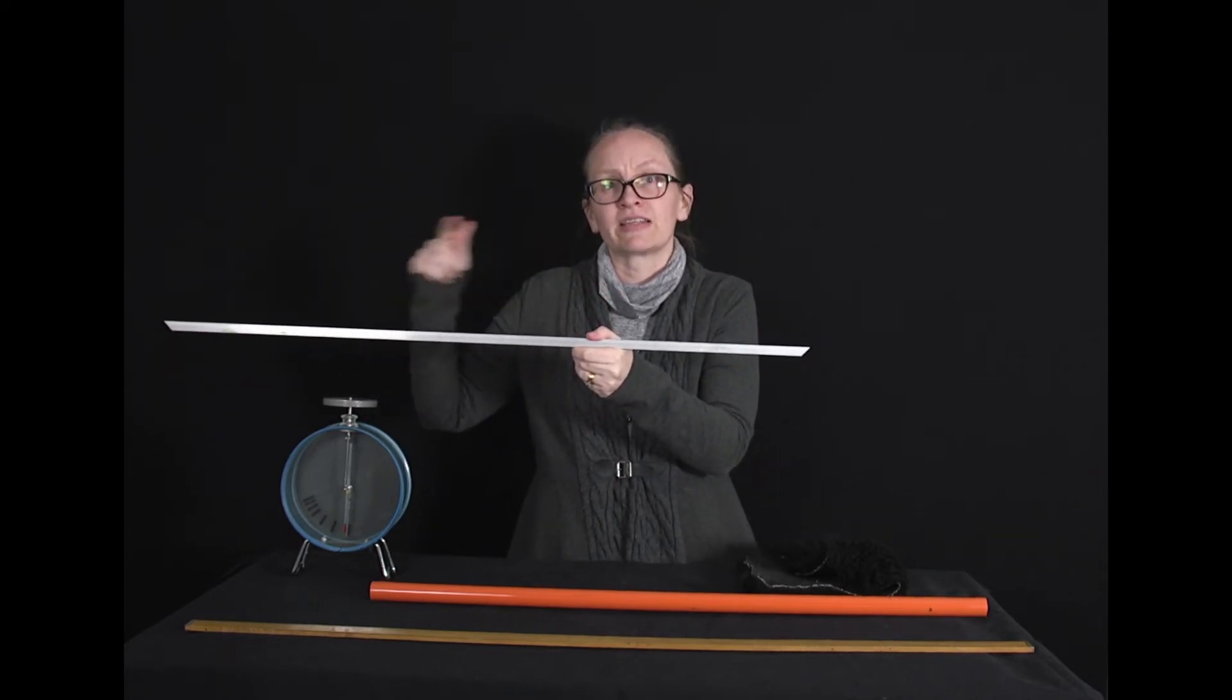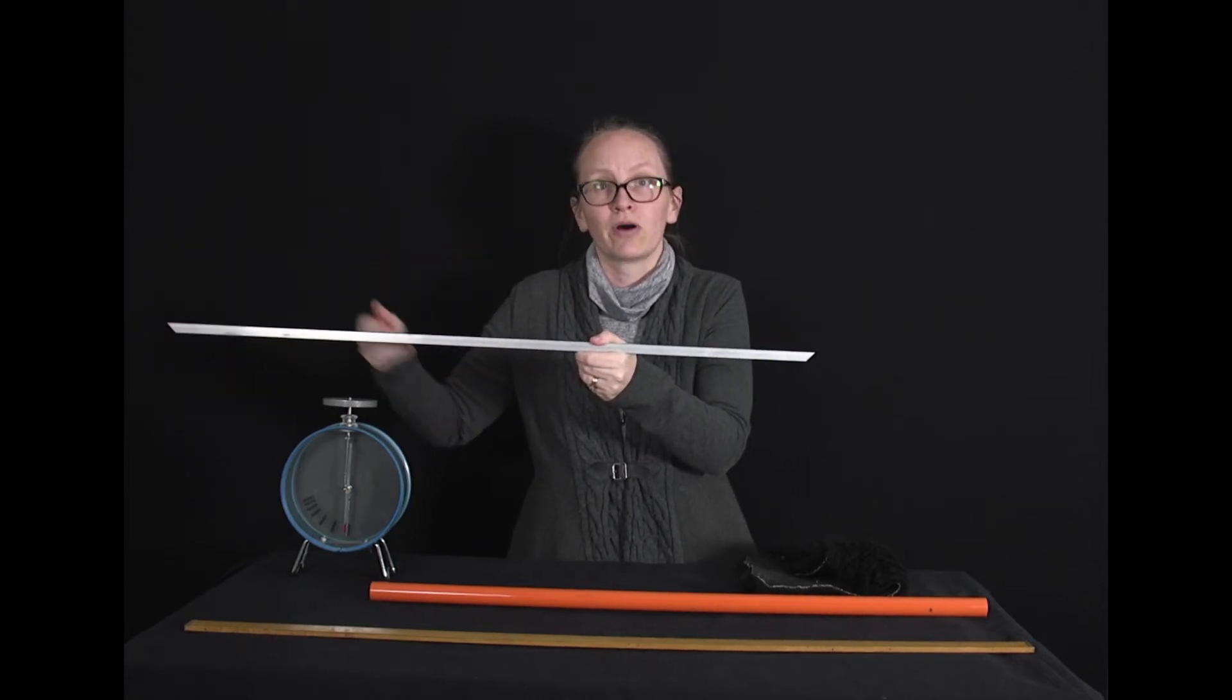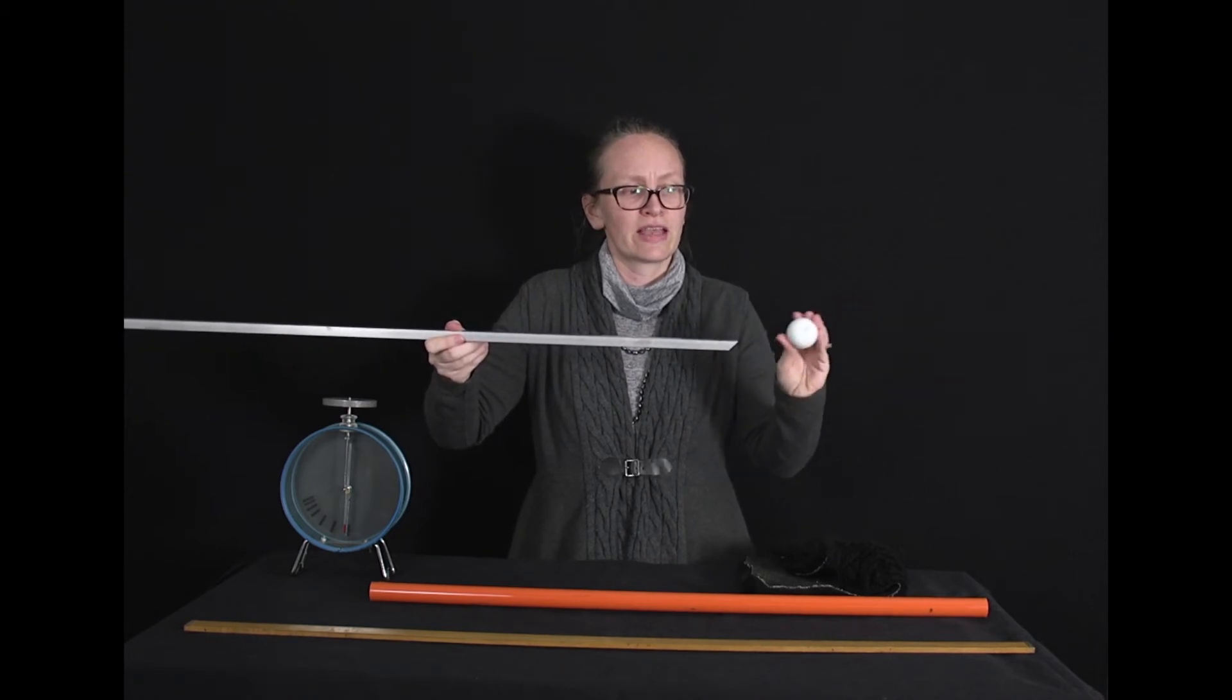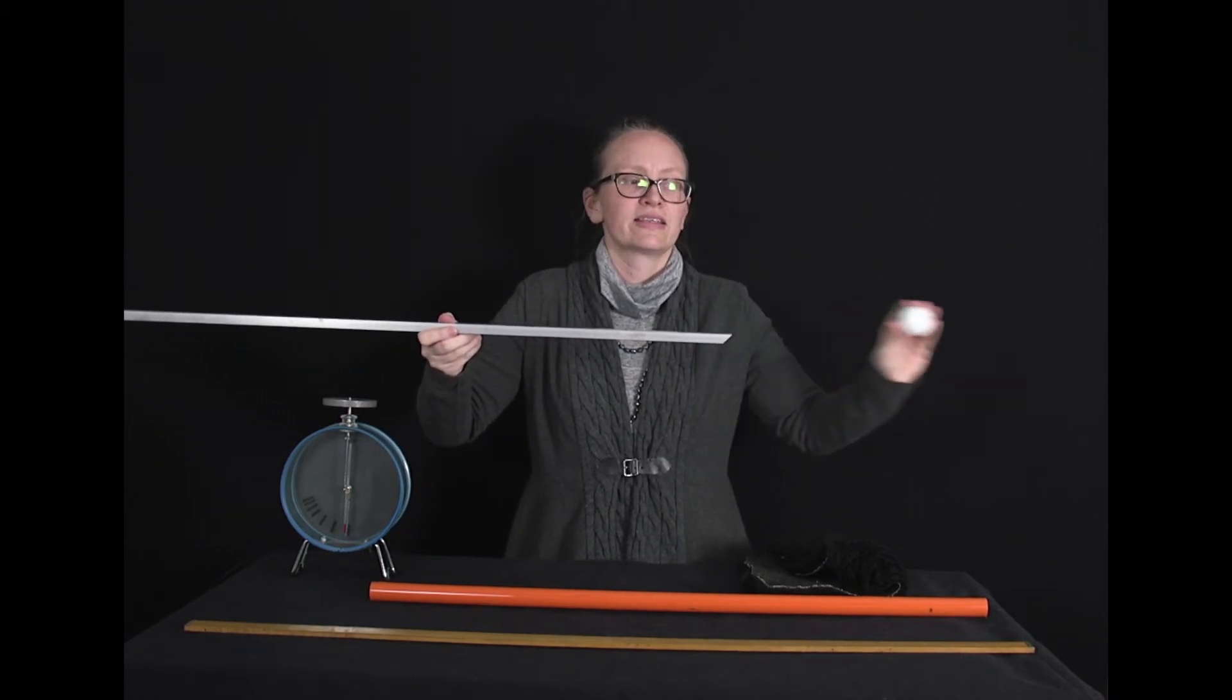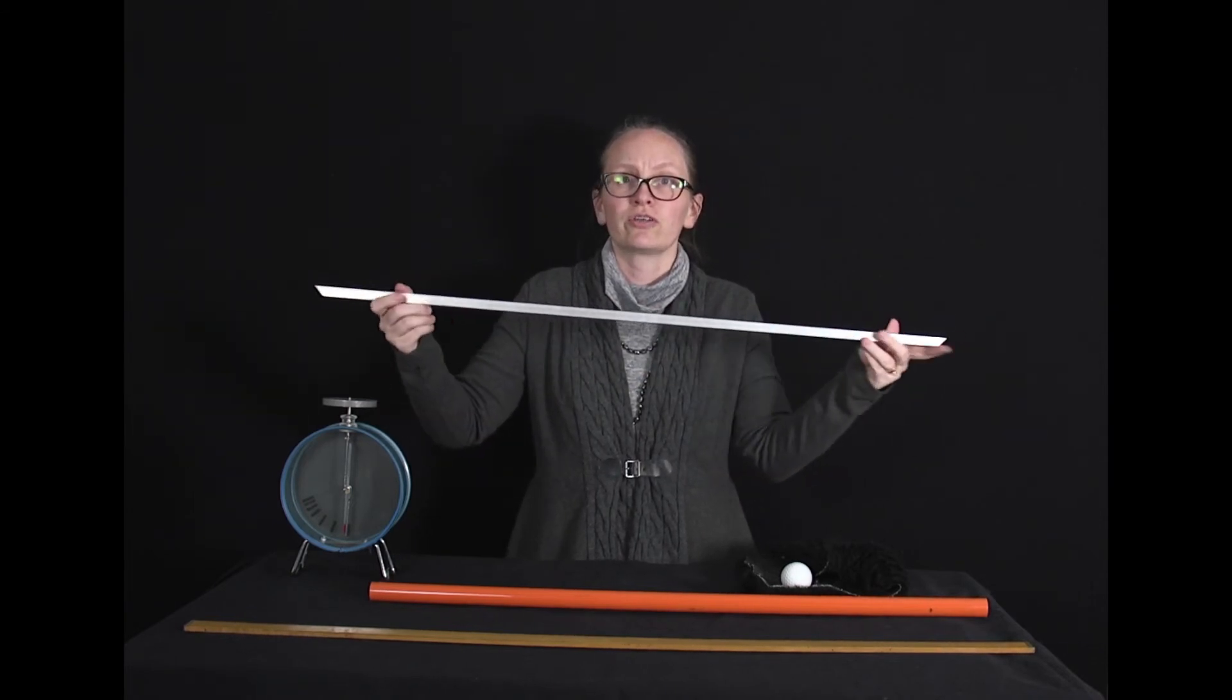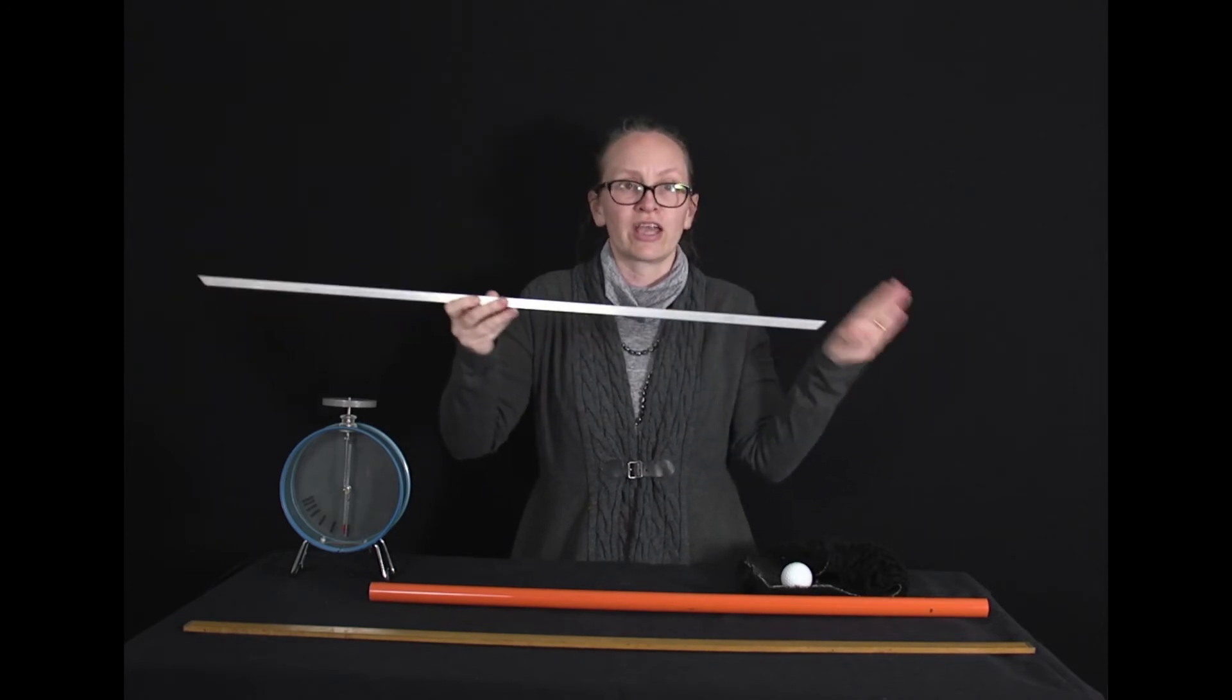So when we've got a positive end and a negative end, that can sometimes be called polarized. Now if I move the negative charge close by and then take it away again, that charge distribution is just going to return to normal. So now I've just got a neutral metal rod with no charge anywhere.